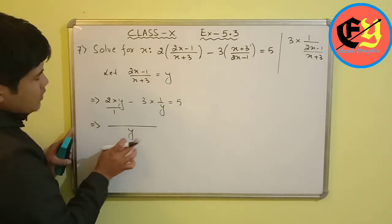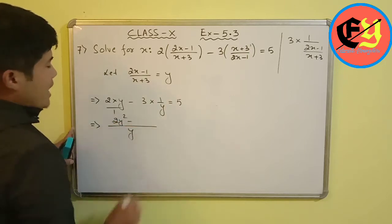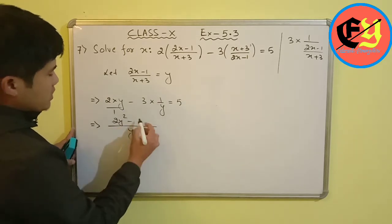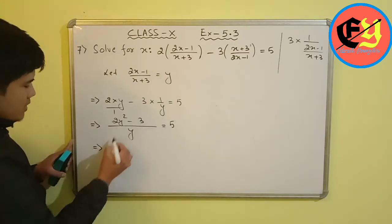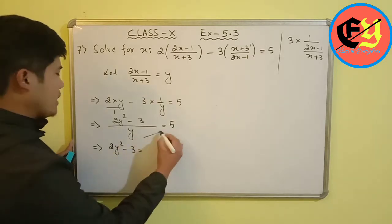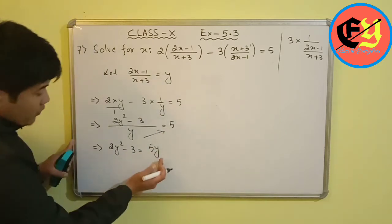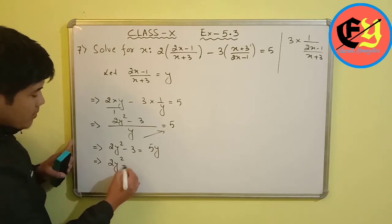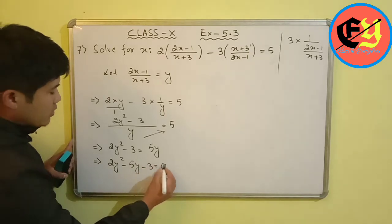Cross multiplying: 2y squared minus 3 equals 5y. Shifting 5y to the left side, we get 2y squared minus 5y minus 3 equals 0.